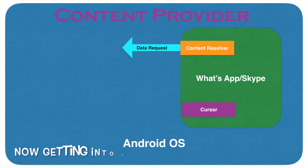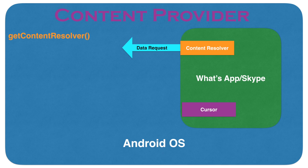The context object contains a method called GetContentResolver which returns an instance of a Content Resolver. To actually hit the correct Content Provider, you need to know the Uniform Resource Identifier, or in short referred to as URI.